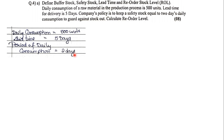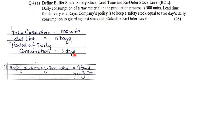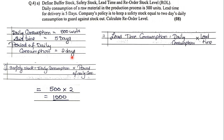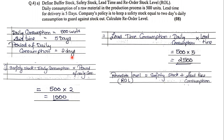Now we apply the formulas. Step 1 — Safety Stock = Daily Consumption × Period of Daily Consumption = 500 × 2 = 1,000 units. Step 2 — Lead Time Consumption = Daily Consumption × Lead Time = 500 × 5 = 2,500 units. Once we have both answers, we apply the final formula: Reorder Level = Safety Stock + Lead Time Consumption = 1,000 + 2,500.